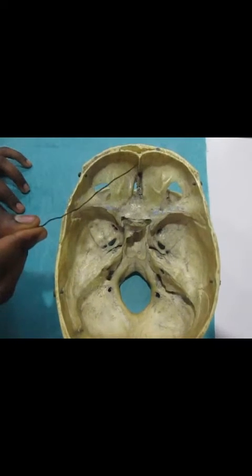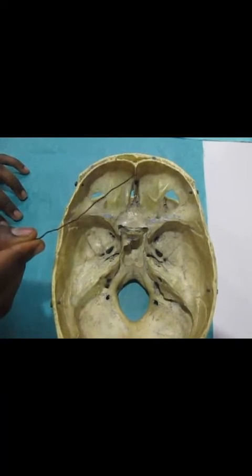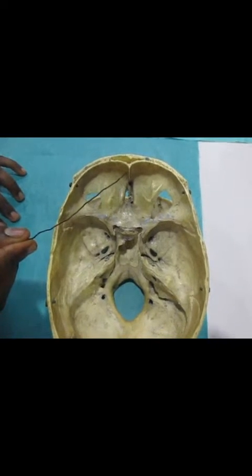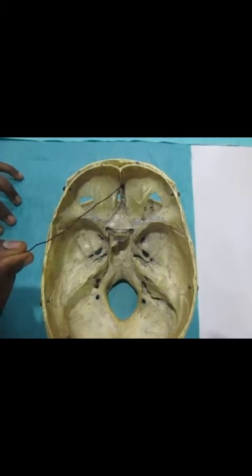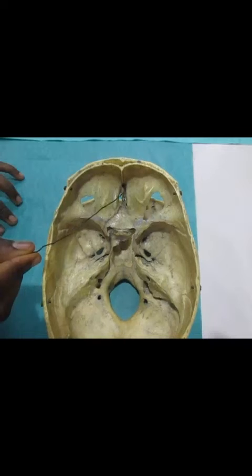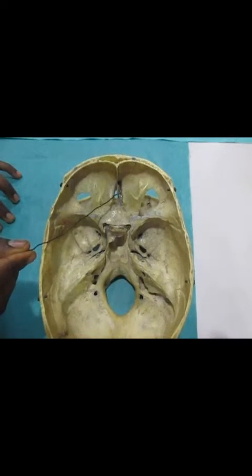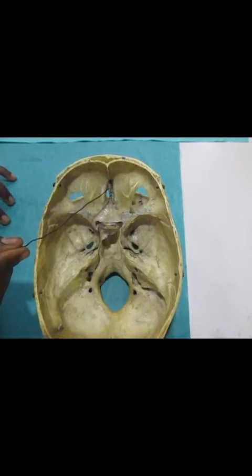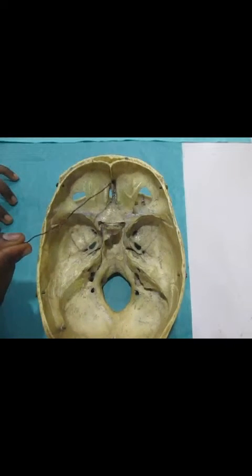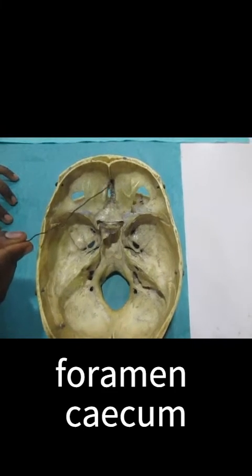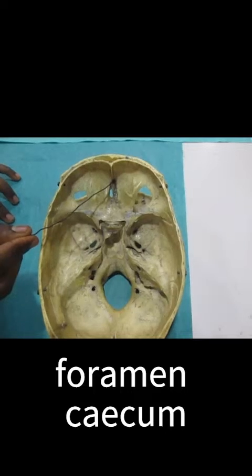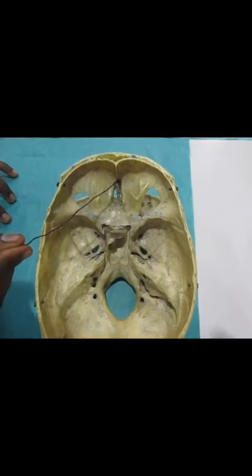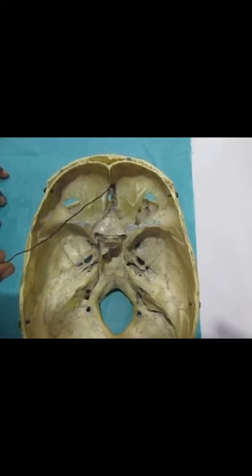This crest-like structure is called the frontal crest, into which the dural fold called the falx cerebri will be attached. Below this, another elevation — a projection — is called the crista galli, into which the falx cerebri will also be attached. Between the frontal crest and the crista galli, this foramen is called the foramen cecum, which is normally a blind foramen.